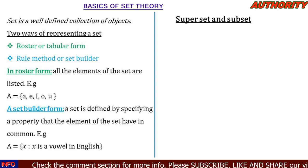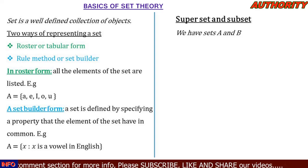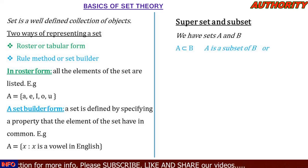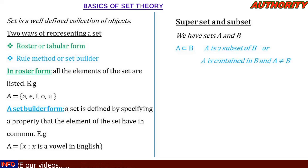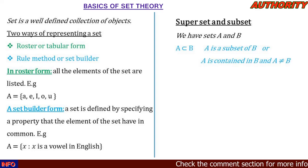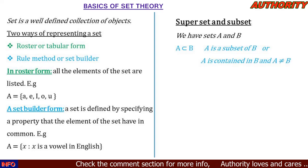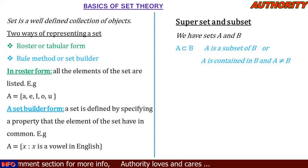Now let's talk about superset and subset. If we have set A and set B with the symbol A ⊂ B, it means A is a subset of B, or A is contained in B. The symbol is facing B, so B is the container — we say A is a subset of B and B is a superset of A.